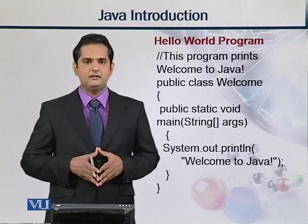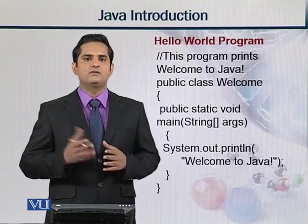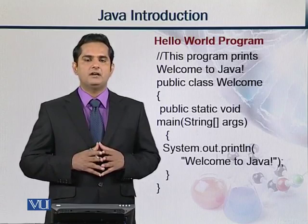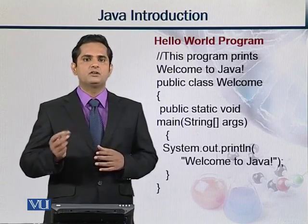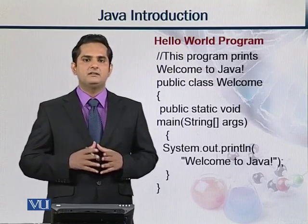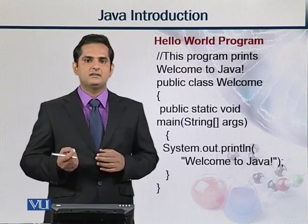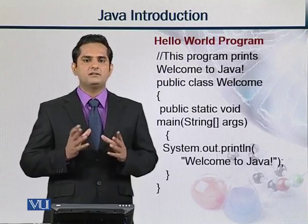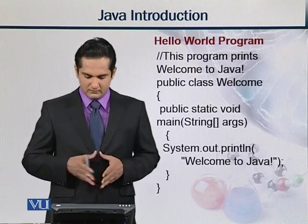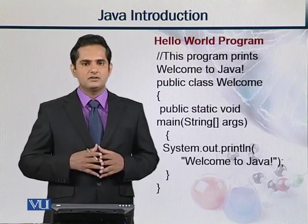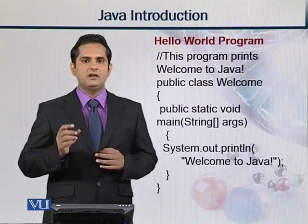'System.out.println' is basically a function — a function performs a specific job. For example, addition is a function that adds two numbers. Similarly, System.out.println is a function that prints output and shows it on the screen. So when we write 'System.out.println("Welcome to Java")' and this function runs, 'Welcome to Java' will appear on the screen.